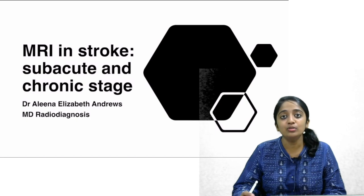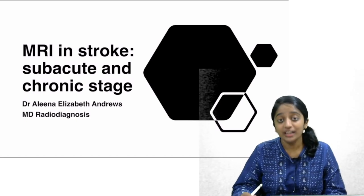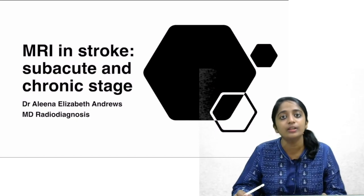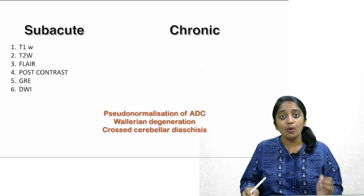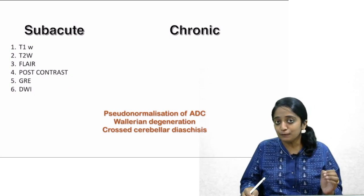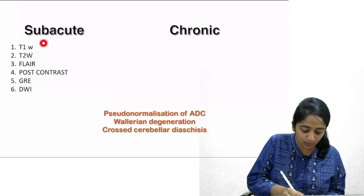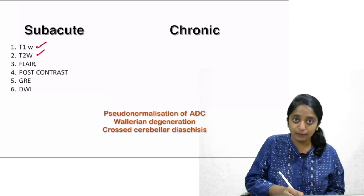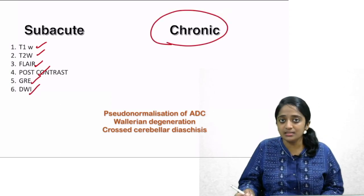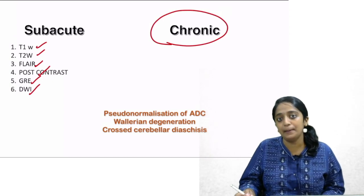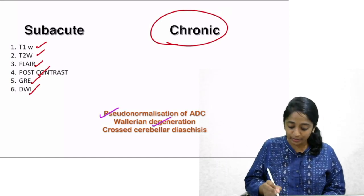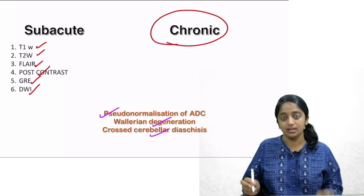Hello friends, welcome back to lecture 5 in the stroke imaging series. In this lecture, I shall discuss the role of MRI in subacute and chronic infarct. I will cover imaging features of subacute infarct in T1-weighted, T2-weighted, FLAIR, post-contrast, GRE, and diffusion-weighted imaging. After that, I shall discuss imaging features of chronic infarct, with highlights on pseudo-normalization of ADC, Wallerian degeneration, and crossed cerebellar diaschisis.